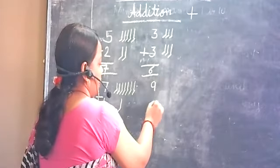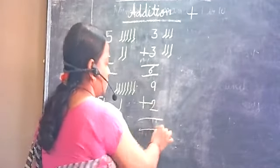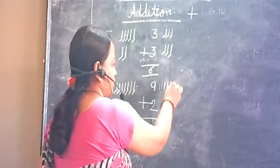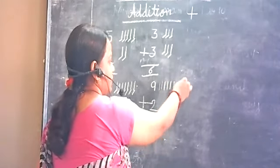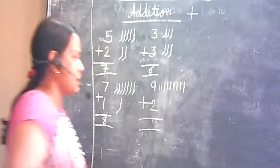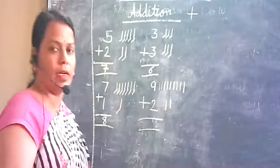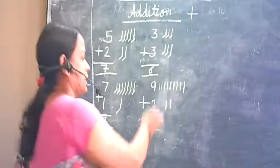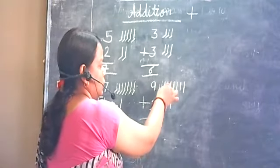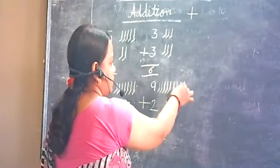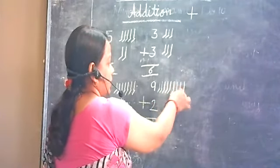9 and 2. First of all, 9 lines. 1, 2, 3, 4, 5, 6, 7, 8 and 9. Us ki baad kikni lines karengi haam? 2 lines. 1 and 2. Now, ime kya karna hai? Add karna hai. So, in sab ko hum kya karengi? Add karne ke liye count karengi. 1, 2, 3, 4, 5, 6, 7, 8, 9, 10 and 11. It means 9 plus 2 equal 11. Understand class? Okay.